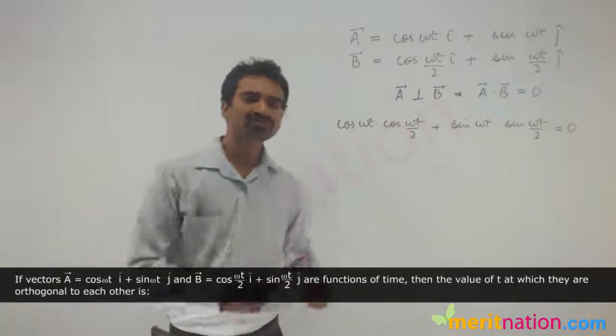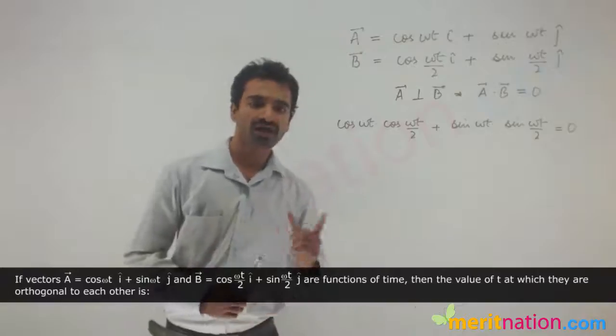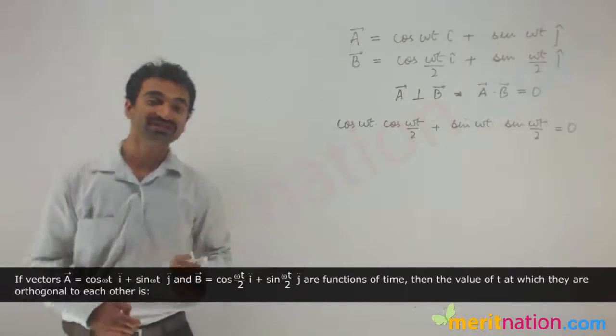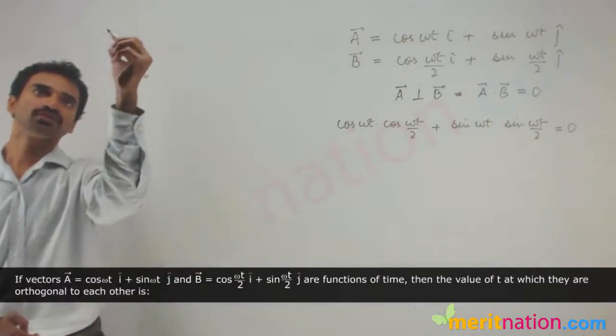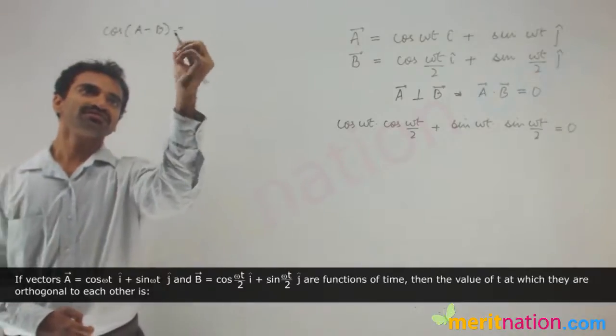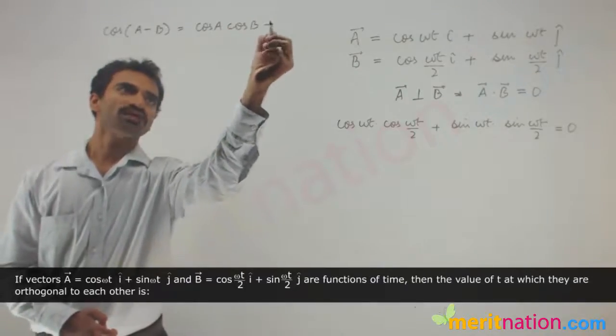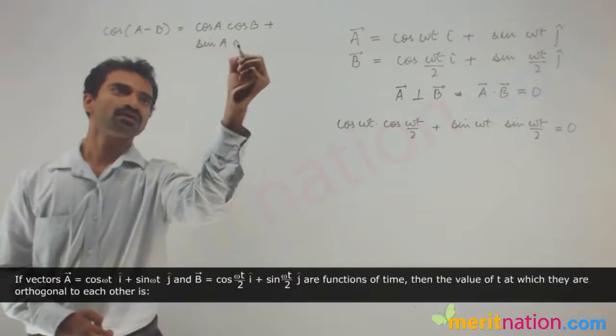Now let's simplify this expression to find out the value of time. When I look at this expression I actually recall an expression of cos(a - b). Let's see. Cos of a minus b is actually equal to cos a cos b plus sin a sin b.